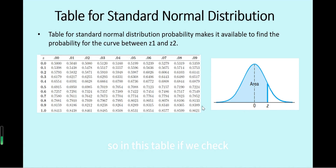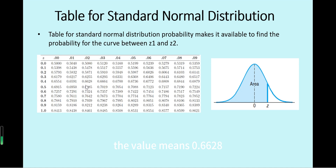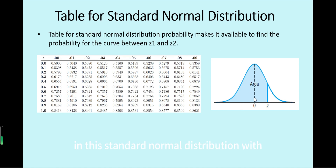In this table, if we check the z value — for example, 0.4 plus 0.02, so z equals 0.42 — the corresponding value is 0.6628. This value represents the shaded area in the standard normal distribution with mean 0 and standard deviation 1.